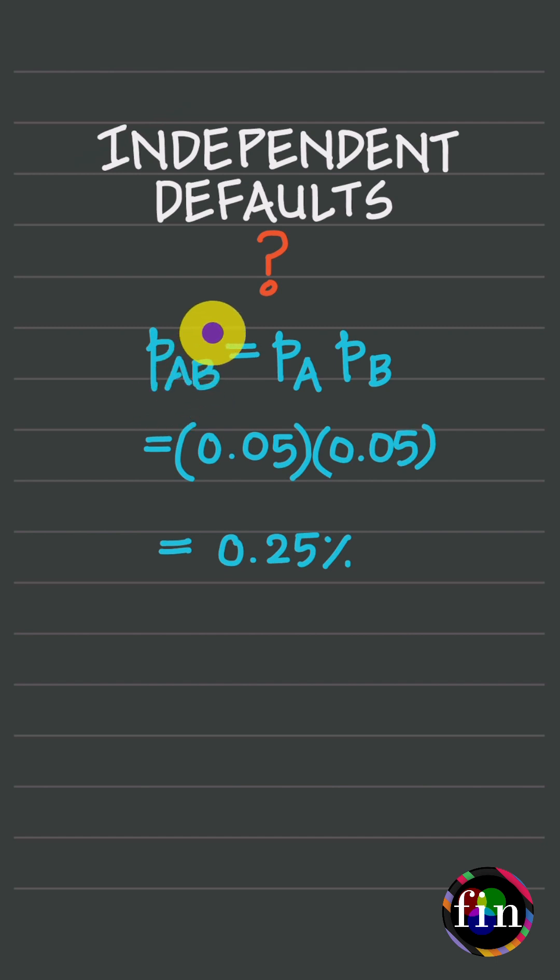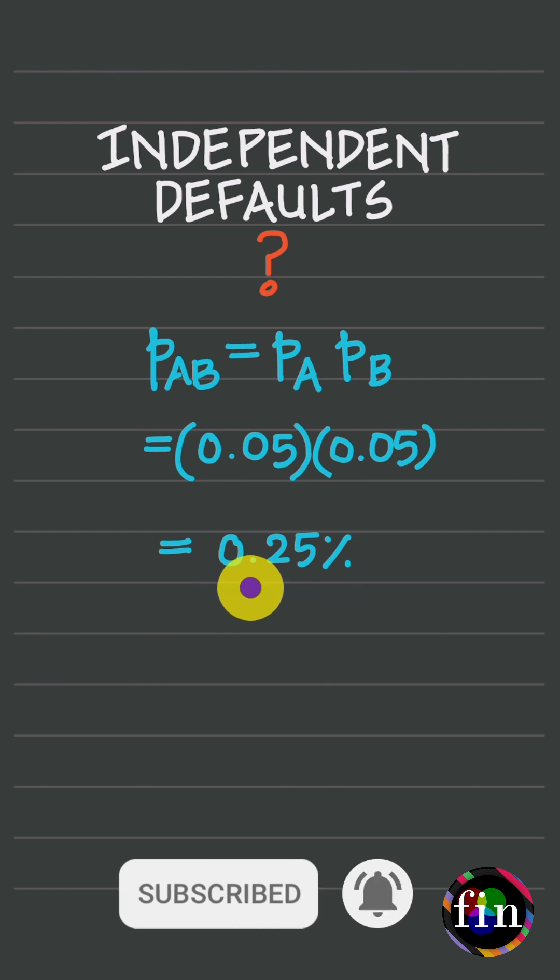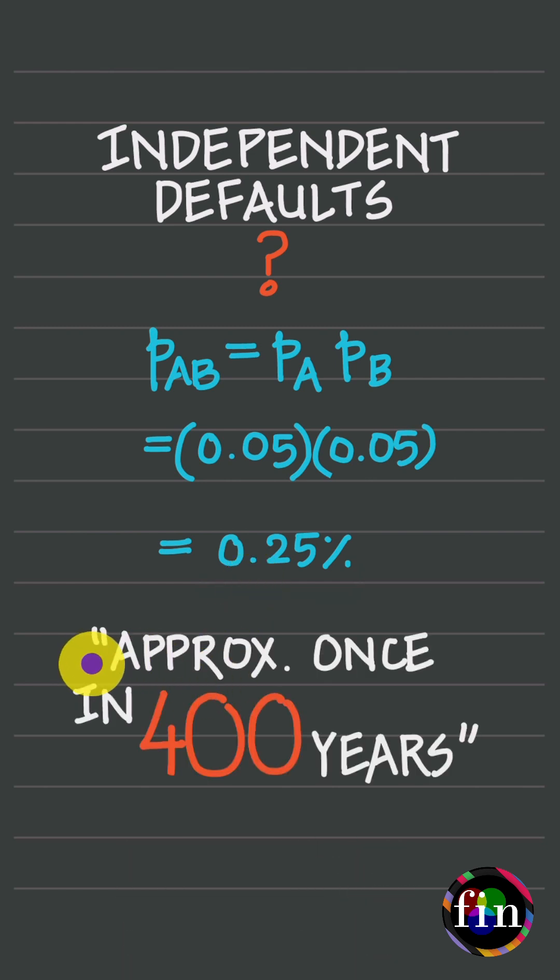Under this assumption, the joint probability of default equals the product of the respective probabilities, which turns out to be 0.25%. This means the event of both loans defaulting in the same year happens approximately once in 400 years.